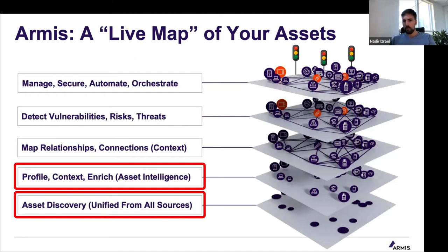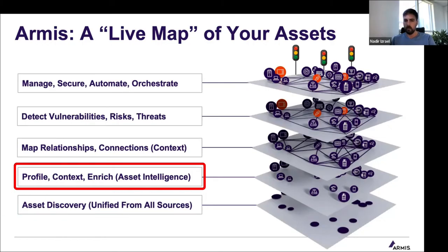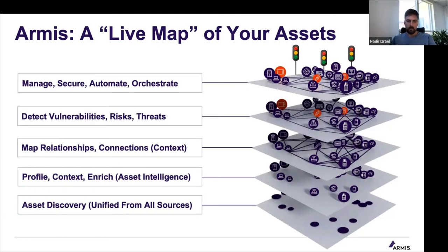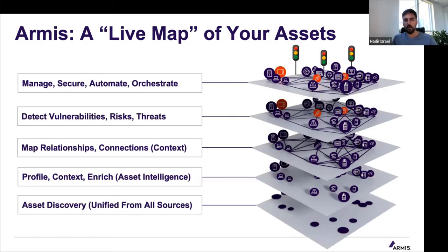We like to think of Armist very much like any one of the live map apps that you use in your world. Armist takes data and telemetry — raw data in many cases — from many different sources. It can be other systems within the environment, network traffic, and other forms of telemetry. The point is it takes all of these raw, many times "dirty" data sources that have different forms of information, puts them together, correlates them, deduplicates, deconflicts, and rationalizes all the information around assets, then puts it together into an asset map.